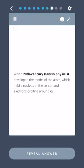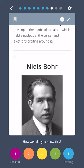Which 20th century Danish physicist developed the model of the atom which held a nucleus at the center and electrons orbiting around it? Niels Bohr.